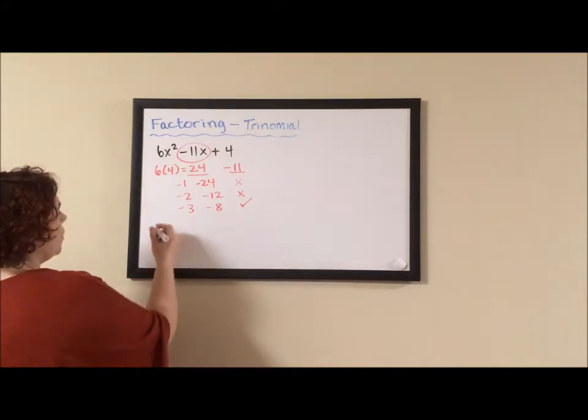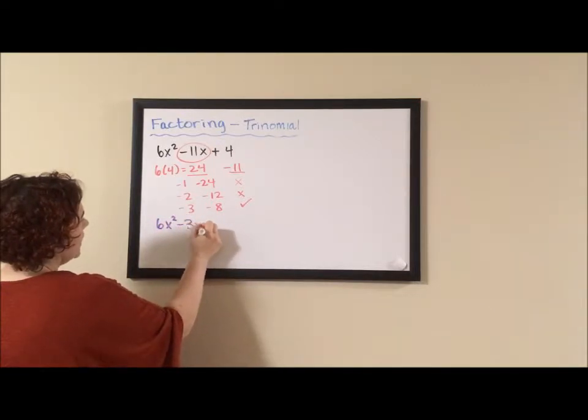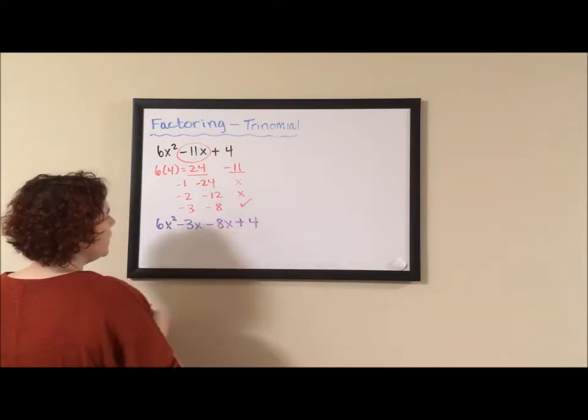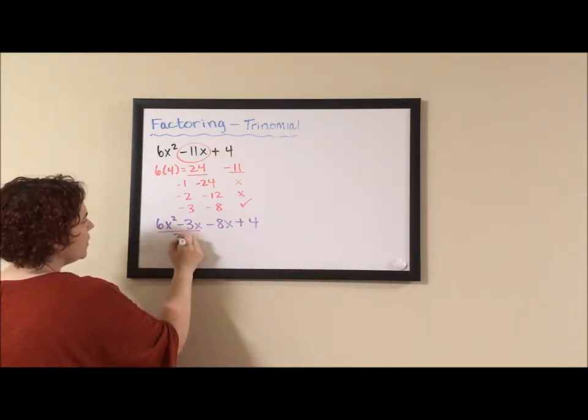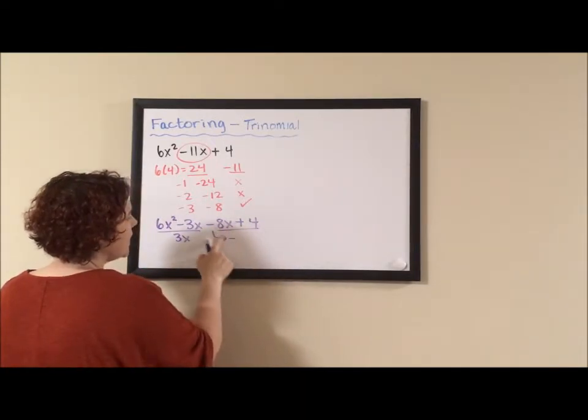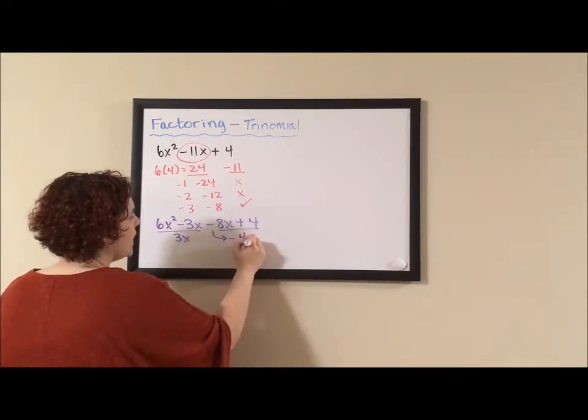So we write 6x squared minus 3x minus 8x plus 4 and factor by grouping. Out of my first two terms, I'm going to pull a 3x. Out of the second, make sure you bring this sign down. Otherwise, things will go awry.